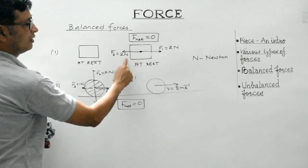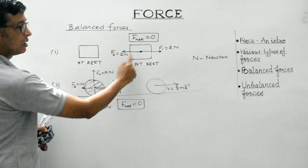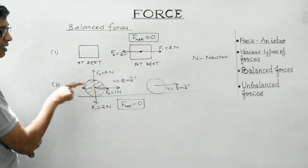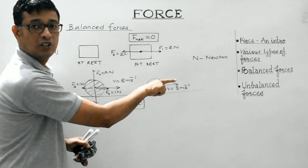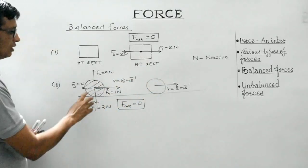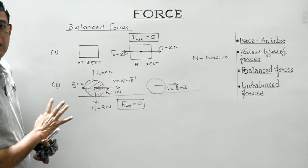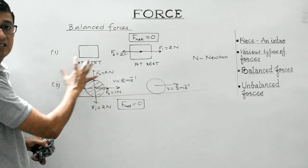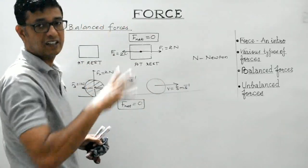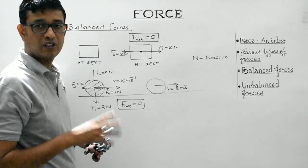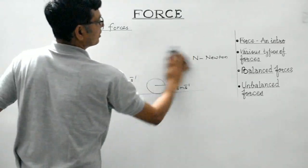Even under the influence of two equal and opposite forces, the body initially at rest remains at rest — because they are balanced. And the body moving at uniform speed of 8 metres per second under the four balanced forces F1, F2, F3, F4 remains in its state of uniform motion along a straight line. Now let's discuss unbalanced forces.